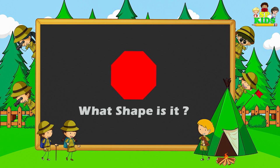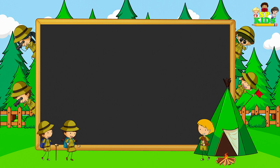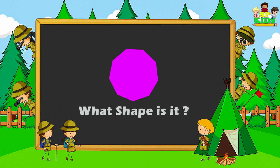What shape is it? Octagon. What shape is it? Nonagon.